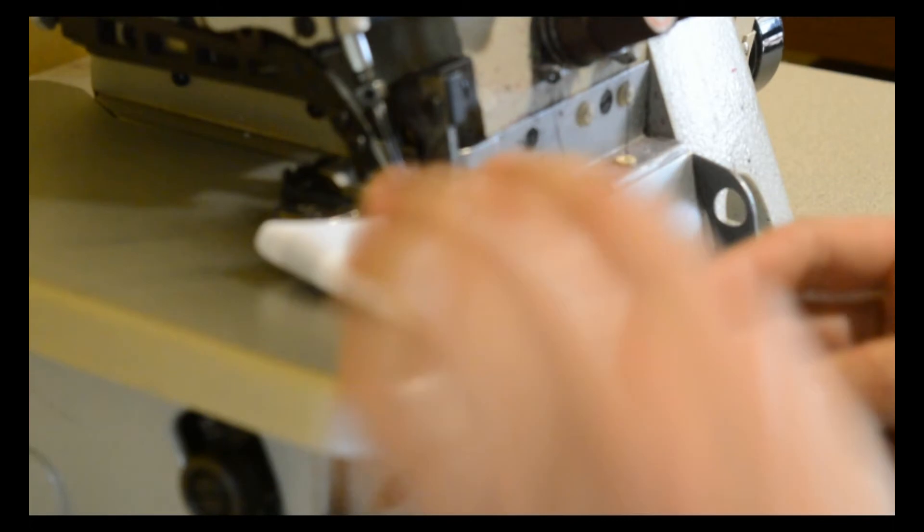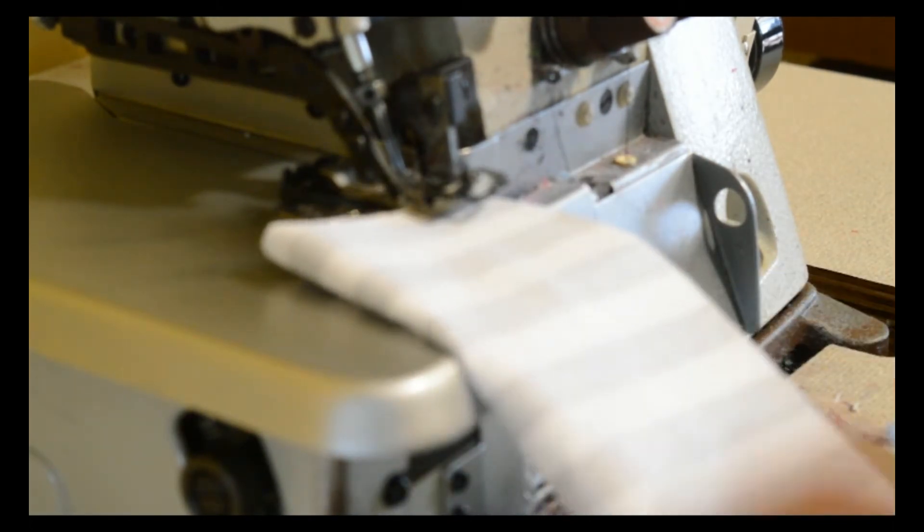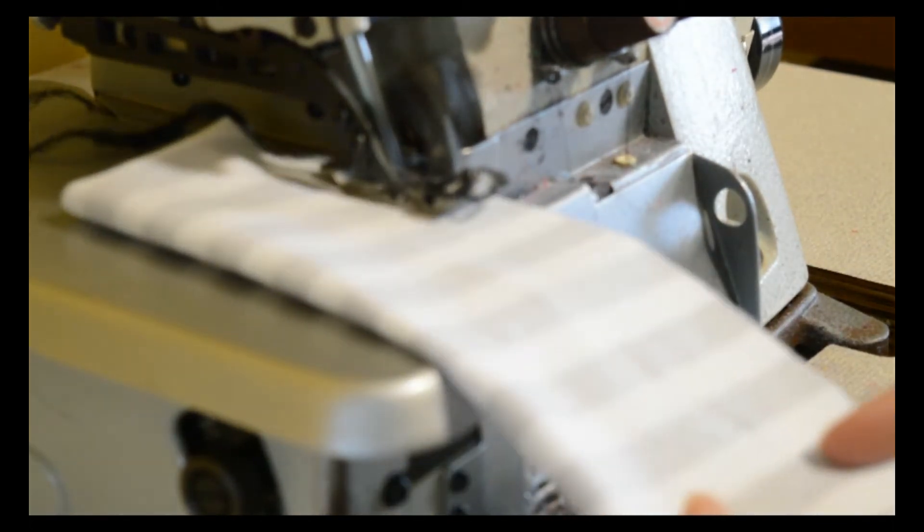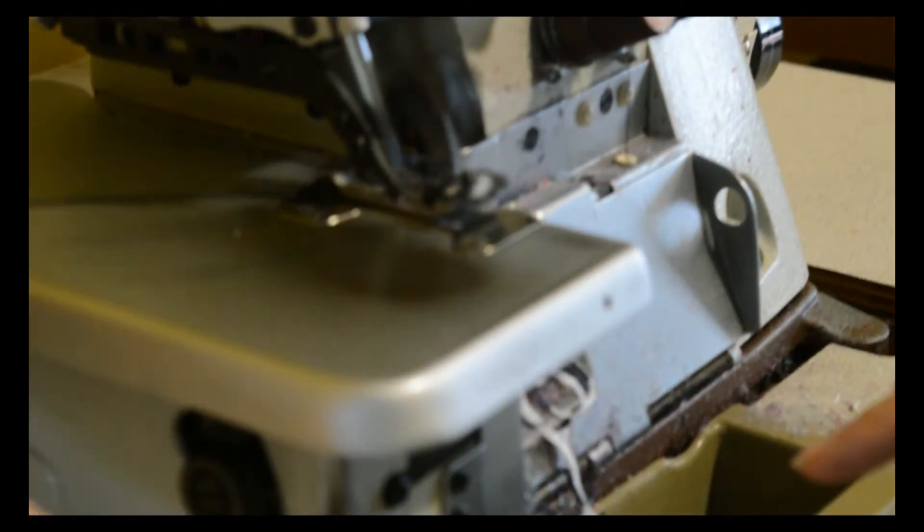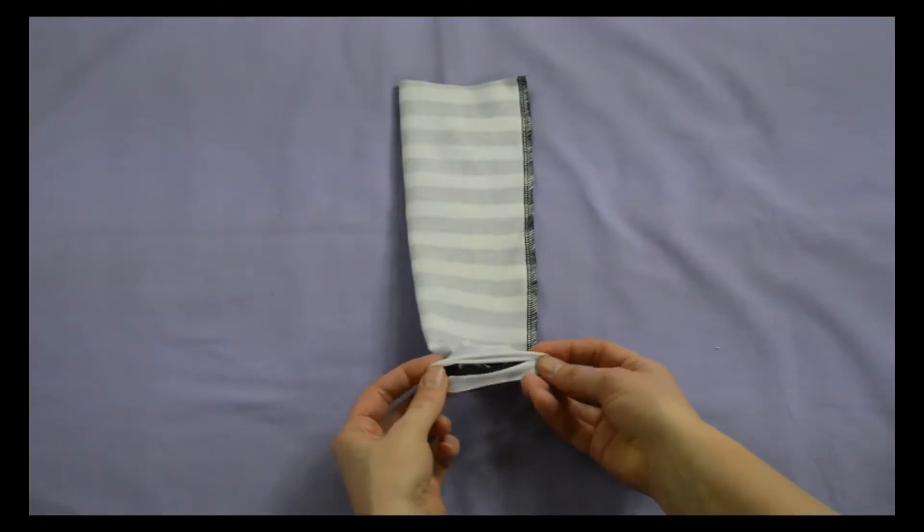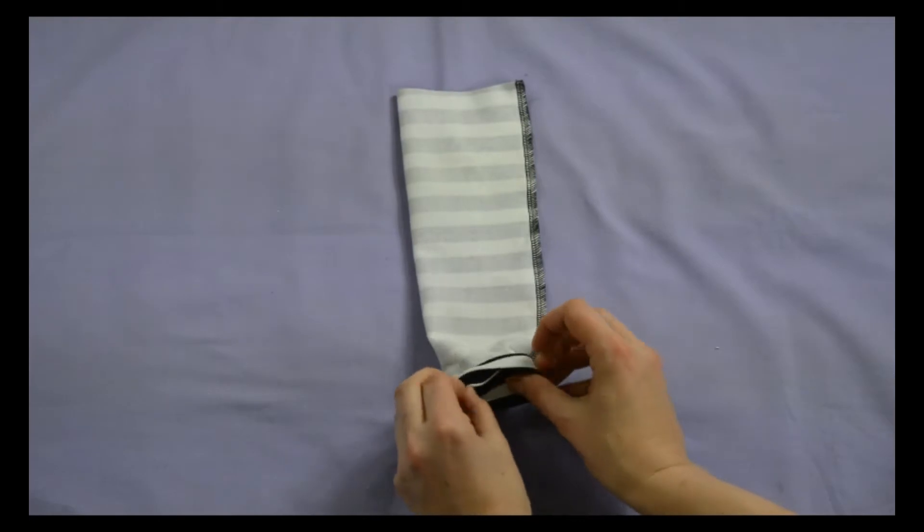Sew the raw edges of your arm warmer together using either an overlocker or a serger, or a zigzag stitch on your sewing machine. Turn up a hem of approximately 1.5 centimeters or half an inch at each end of your arm warmer.